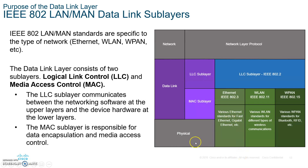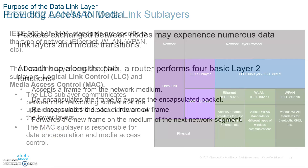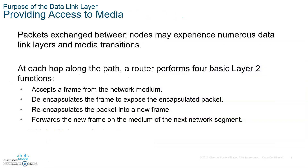The MAC sub-layer finishes placing the frame onto the physical media so we can transmit it. It also handles media access — grabbing the frame, assembling it, and passing it up. Write this down: the Data Link Layer is broken up into two sub-layers, the LLC and the MAC, and write the definitions of each.